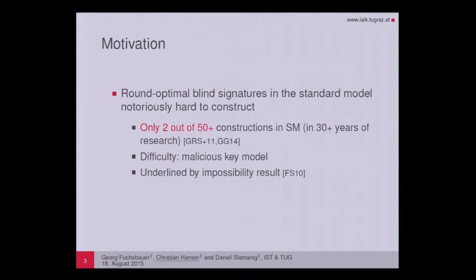The motivation behind this talk is that round-optimal blind signatures are notoriously hard to construct in the standard model. So far, in over 30 years of research and out of over 50 different constructions, only two of them are in the standard model. These two constructions make heavy use of complexity leveraging and are therefore practically inefficient. The main difficulty seems to be the malicious key model, where the adversary fully determines the public key and the reduction has no access to the secret key. This is underlined by an impossibility result by Fischlin and Schröder, which determines certain criteria for schemes under which it is impossible to find a reduction from the unforgeability of a blind signature scheme to non-interactive assumptions.